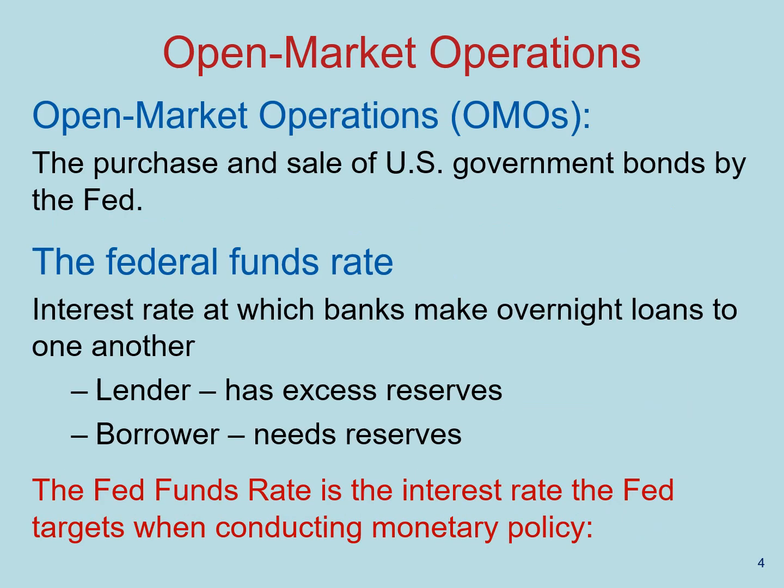The tool we're going to talk about is open market operations — the purchase and sale of US government bonds by the Fed. They do open market operations in the federal funds market. The federal funds rate is the interest rate at which banks make overnight loans to one another. In that market, the lender has excess reserves that they would like to lend, and borrowers need reserves to meet the requirements.